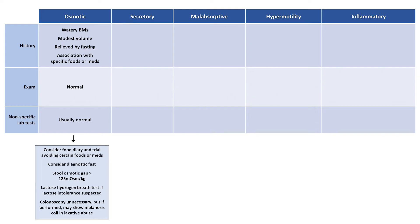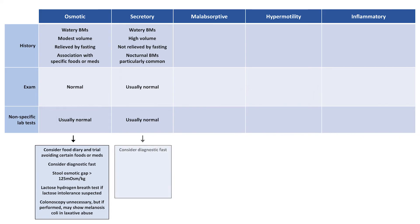In secretory diarrhea, patients present with high volume watery bowel movements that are not relieved with fasting and may continue unchanged overnight. The physical exam and routine labs are usually normal. Tests specific for secretory diarrhea include a diagnostic fast to confirm the lack of improvement. A stool osmotic gap will be low, contrasting it with osmotic diarrhea. A CT of the abdomen and pelvis, as well as specific hormone testing, can be considered if a neuroendocrine tumor is suspected.